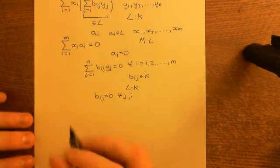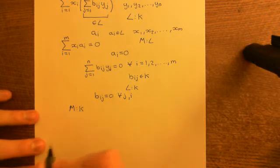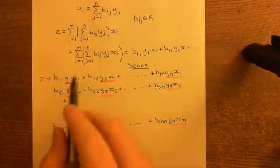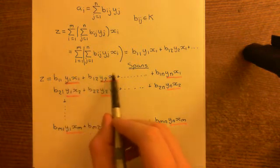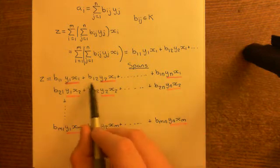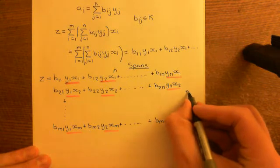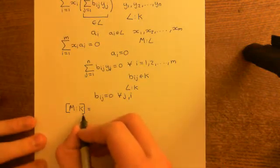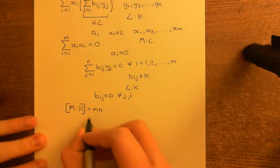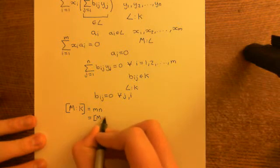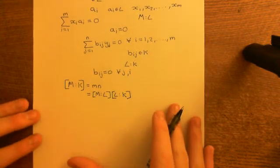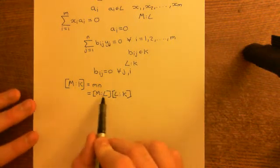We have now proven that the set {yⱼxᵢ} both spans and is linearly independent, so it is a basis for the vector space M over K. To find the degree of the field extension, we just count elements in that set. We have a table with n elements along one side and m going downwards, so the total number is n times m. The degree of M over K is m times n — but m was the degree of M over L, and n was the degree of L over K. That now shows the tower rule is true, provided that both of these are finite.